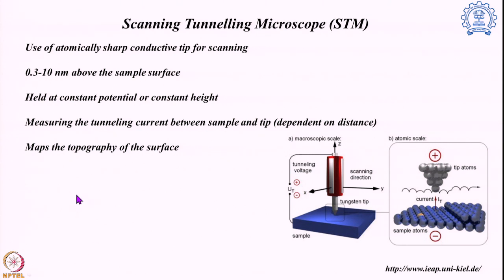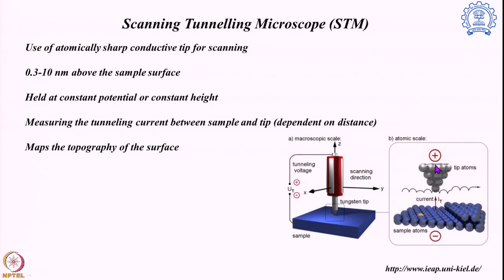Then come the scanning probe microscopes. Unlike the previous electron microscopes where we bombard the system with electrons, in the probing systems we use a sharp tip which can be handled at the atomic scale, and that is used for scanning. The instrument shown here has a tip with only a few atoms present, and that is a conductive tip capable of transporting electrons, so we can control its potential and the electricity passing through it.